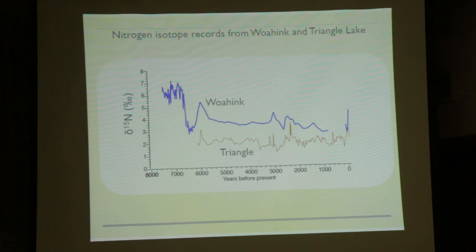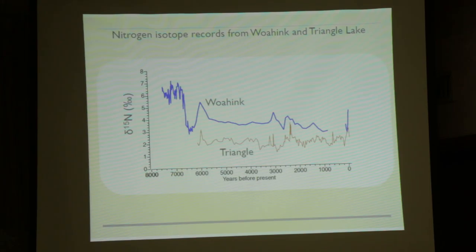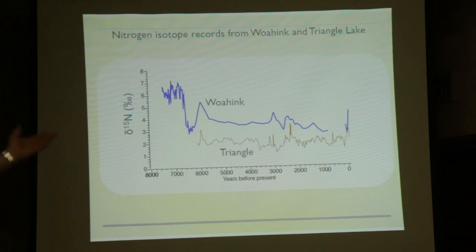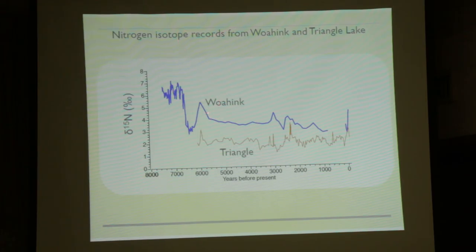This long-term decline can be somewhat explained by our understanding of climate change through this period. There's coastal upwelling which provides nutrients along the coast for the food chain to grow our fish in the ocean, and there is a long-term decline in the strength of that upwelling over the last 7,000 years, which has been observed in ocean studies. As upwelling decreases, ocean surface temperatures are increasing, which correlates with this decline in the nitrogen-15 signal.